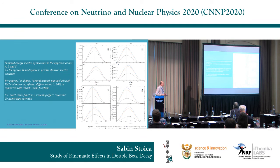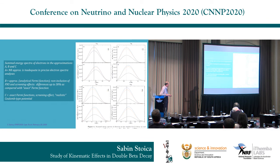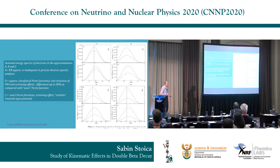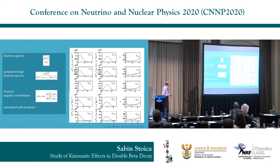After calculating the phase-space factors, we calculated the electron spectra in all approximations. Here are plotted the electron spectra and their deviation due to Lorentz violation - scaled for comparison - where one can see the deviation if Lorentz invariance is violated. We did this for eight nuclei most important from an experimental point of view, and also for other nuclei. Besides the phase-space factors and electron spectra, electron angular correlations are also important and we calculated these by our method for eight nuclei.